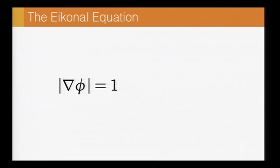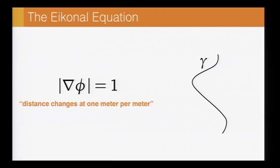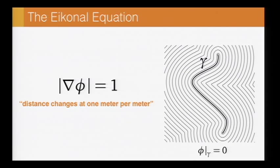So let's see how this all works. Typically, the way that you formulate distance computation is in terms of this eikonal equation. So if phi is the distance to the source, the eikonal equation says that the gradient of phi has to have unit norm everywhere. Or put more simply, it says that distance changes at one meter per meter. So for instance, if I want the distance to this curve, I could set phi to zero along the curve and solve the eikonal equation everywhere else.